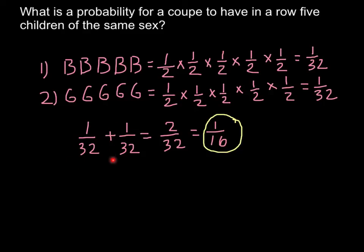So we have to add both events. And this is going to be our answer. And this would be a simplified form of 2 over 32. So our answer is 1 over 16.